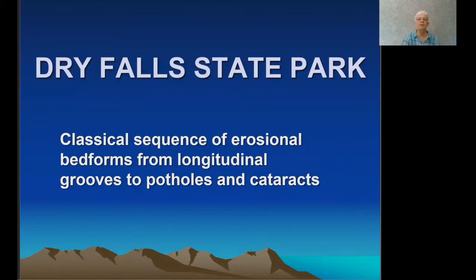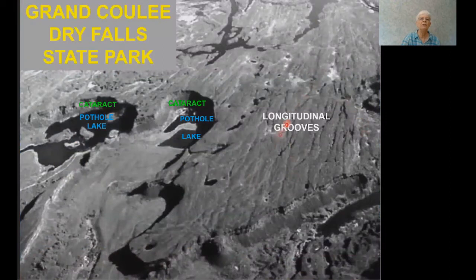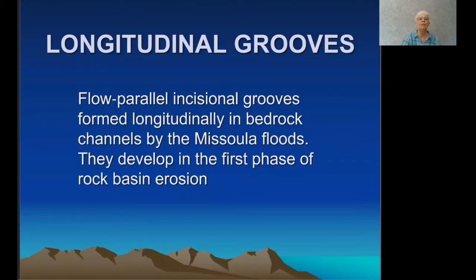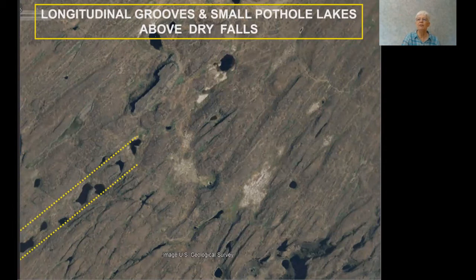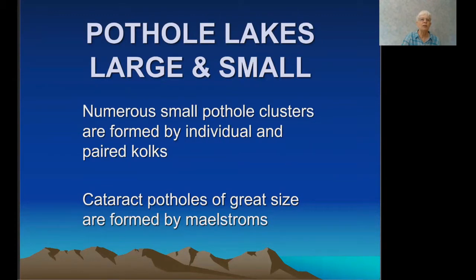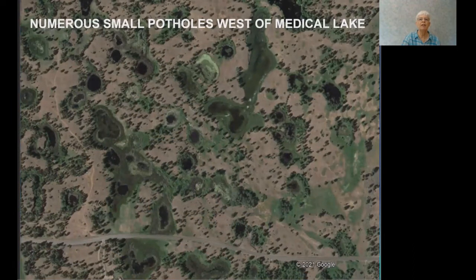Dry Falls State Park is a classical sequence of erosional bedforms from longitudinal grooves to potholes and cataracts. Longitudinal grooves are flow-parallel incised grooves formed in bedrock channels by the Missoula floods — they develop in the first phase of rock basin erosion. When small aligned potholes merge, a rock basin forms. Pothole lakes come in large and small: numerous small pothole clusters are formed by individual and paired colks, while cataract potholes of great size are formed by maelstroms.